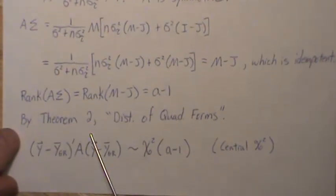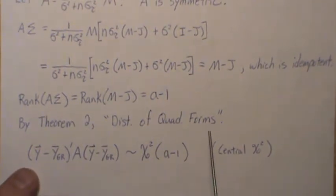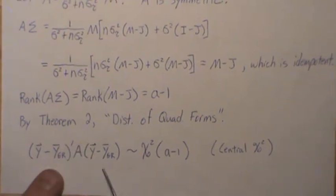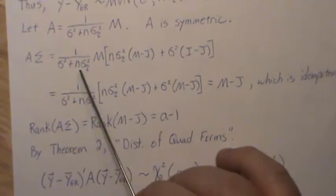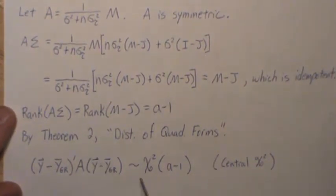So by theorem two, this is the theorem distribution of quadratic forms. We know, now remember, the mean was zero and this was the variance-covariance matrix. So this times A, that vector times this matrix A times this, is a central chi-squared A - 1 degrees of freedom. And this instantly follows from theorem two. It's a central chi-squared.